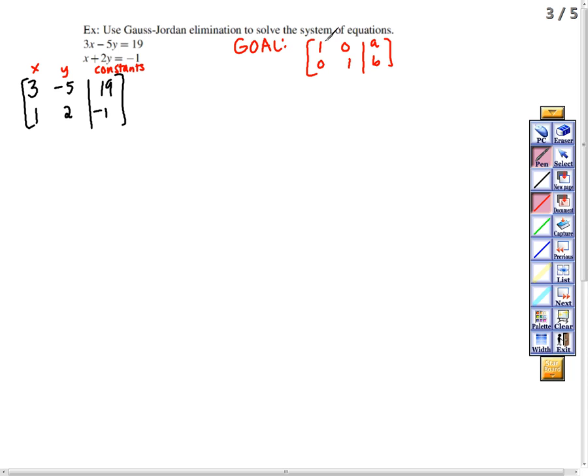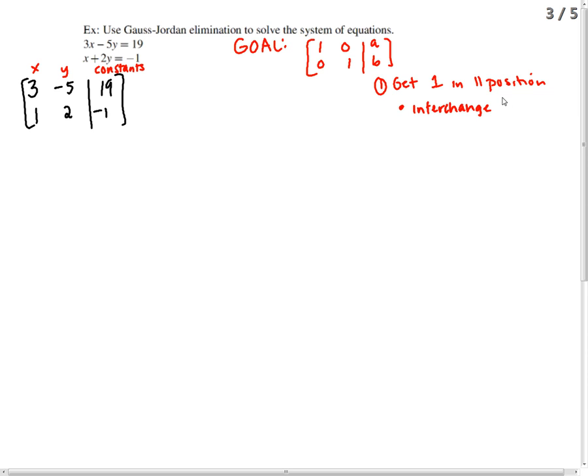So the first step is to get the 1 in the 1,1 position. We can do that two ways. We can interchange two rows, or we can multiply by the multiplicative inverse of 3. If it's the 1,1 position, you can interchange two rows or use row operation 3, which is 1 over the number to change times the row to change. It goes to the row to change.